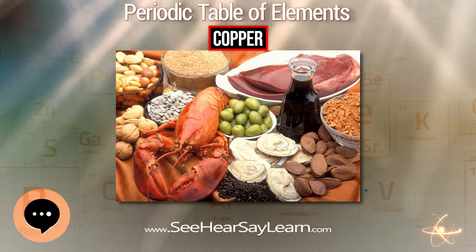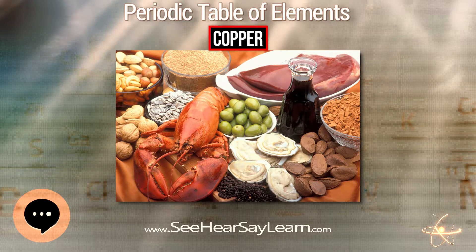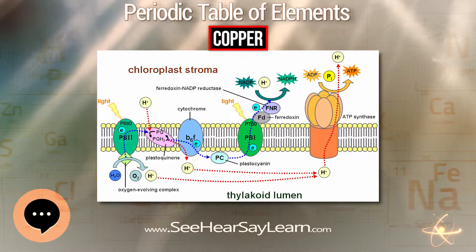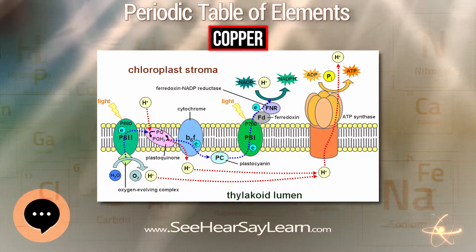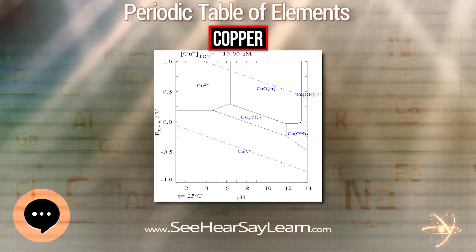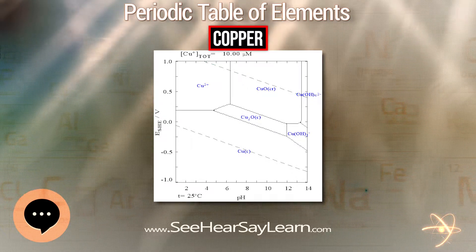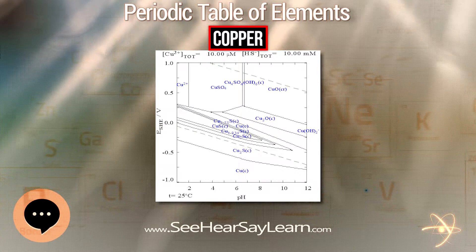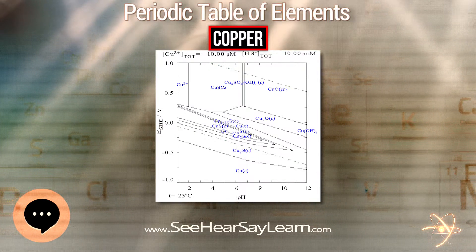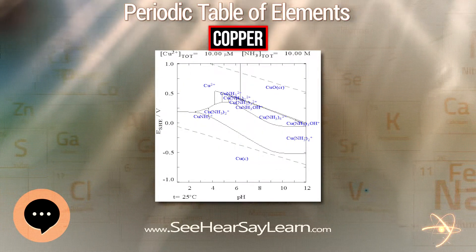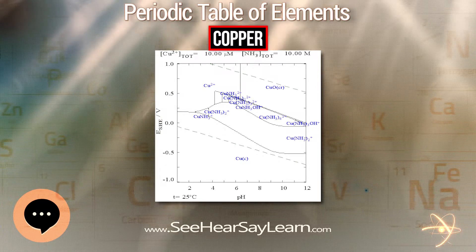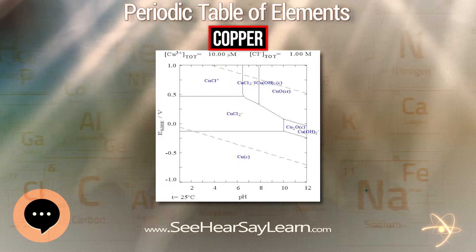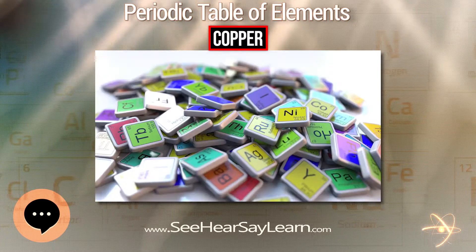A timeline of copper illustrates how the metal has advanced human civilization for the past 11,000 years. Copper occurs naturally as native metallic copper and was known to some of the oldest civilizations on record. The history of copper use dates to 9000 BC in the Middle East; a copper pendant was found in northern Iraq dating to 8700 BC. Evidence suggests that gold and meteoric iron were the only metals used by humans before copper.